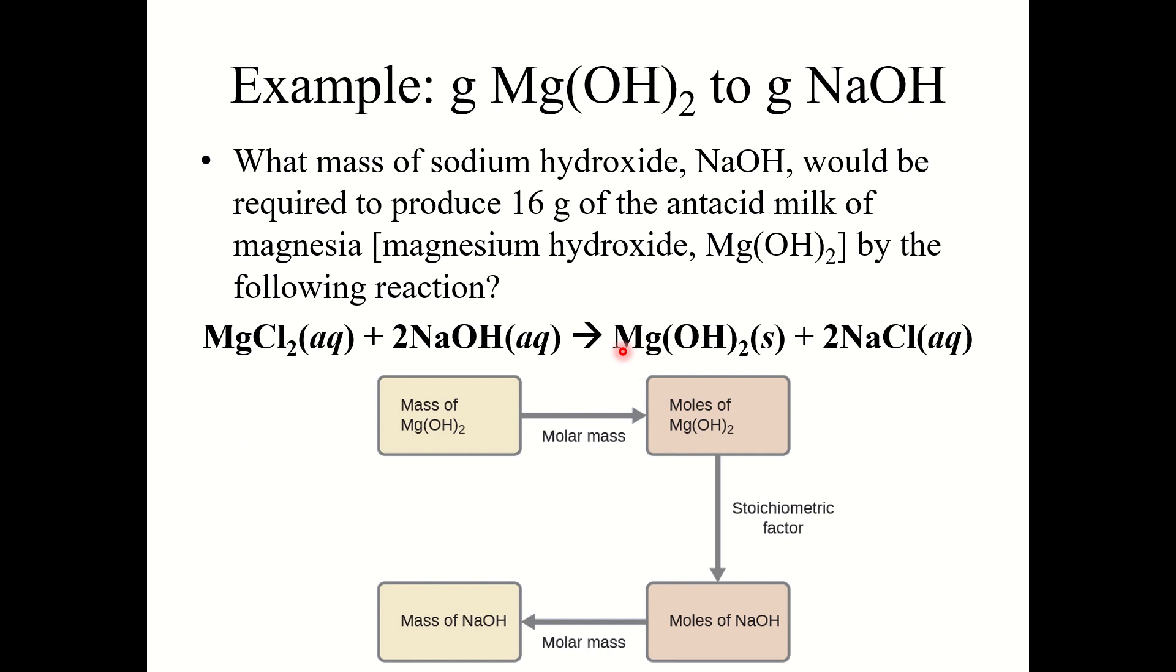Let's look at this problem here. What mass of sodium hydroxide, NaOH, would be required to produce 16 grams of the antacid milk of magnesia, which is magnesium hydroxide. So we want to produce 16 grams magnesium hydroxide. And we want to know how much sodium hydroxide do we need.